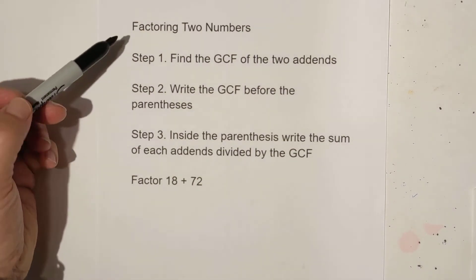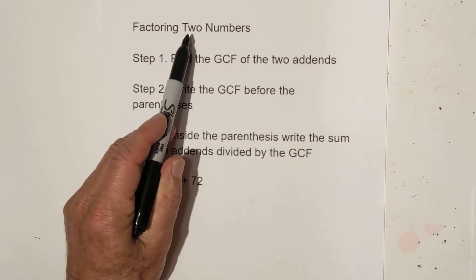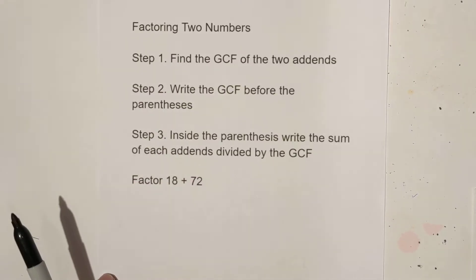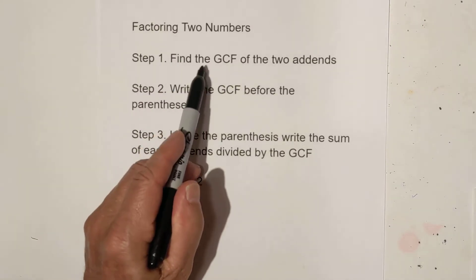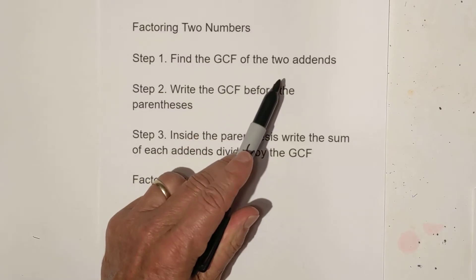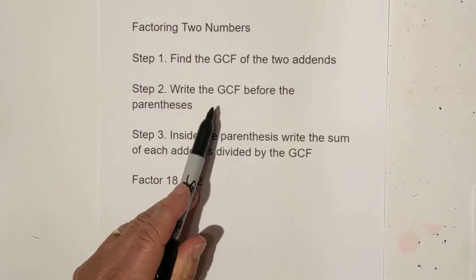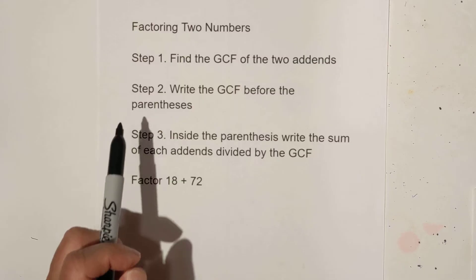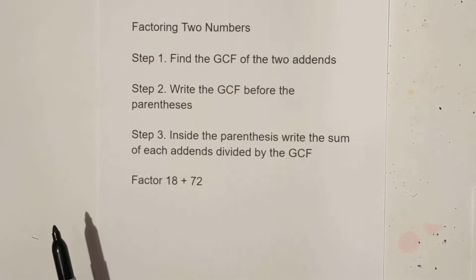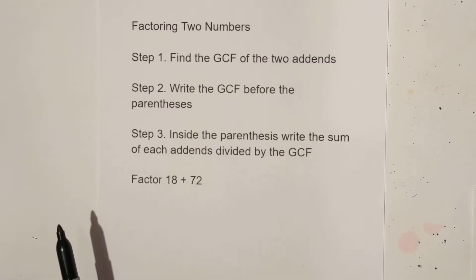Welcome to Moo Moo Math and Science. In this video we're going to go over how to factor two numbers that are being added together. Here's what we're going to do. We're going to first find the greatest common factor of the two addends. Then we're going to write the GCF before the parentheses. And then inside the parentheses we're going to write the sum of each addends divided by the GCF. So let's see if we can do that. Let's get started.